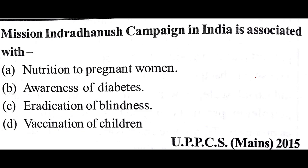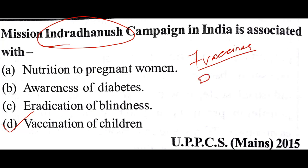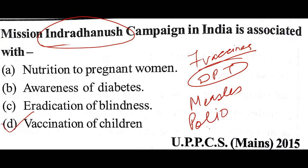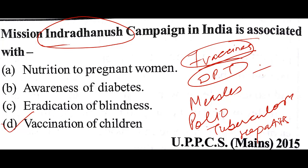Mission Indra Dhanush campaign in India is associated with vaccination of children. As the name suggests — Indra Dhanush — it has seven vaccines: basically three vaccines DPT, and four others: measles, polio, tuberculosis, and hepatitis. Earlier it contained only seven vaccines, but now it contains five more vaccines.